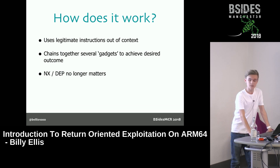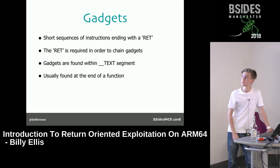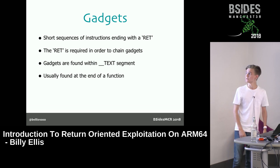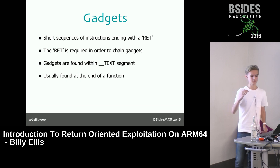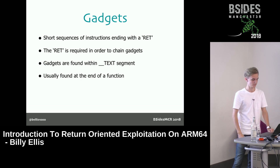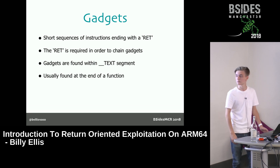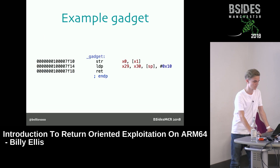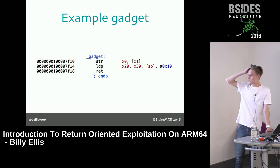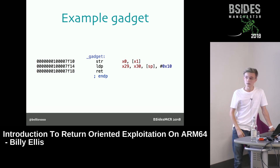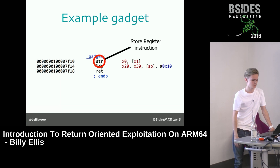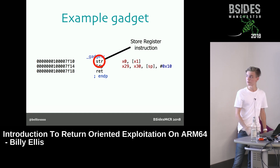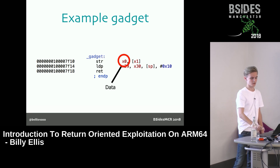You actually use gadgets — short sequences of instructions that end with a return instruction. This return instruction is the vital part that allows you to chain together several pieces of code to execute a full payload. These gadgets are found within the text segment or executable segment, and are normally found at the end of a function because they end in the return instruction.